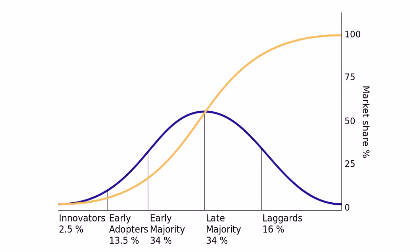The categories of adopters are innovators, early adopters, early majority, late majority, and laggards. The successive groups of consumers adopting the new technology is shown in blue. The market share, in yellow, shows the increasing spread of the innovation as it is adopted by more consumer groups.